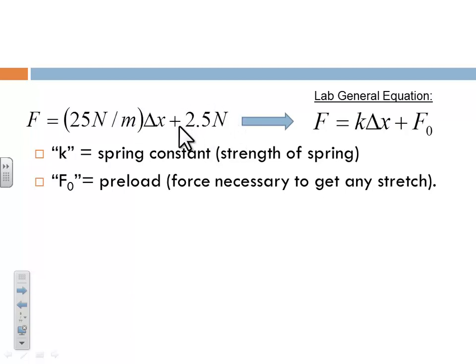And so this spring, if this was actual data, basically it means that we'd have to put 2.5 newtons of pull on there before it stretches at all. And we use a little f sub 0 to represent the preload value or the initial force needed to get any stretch.